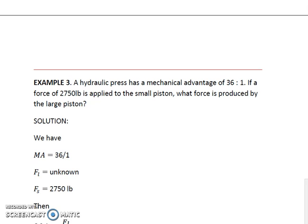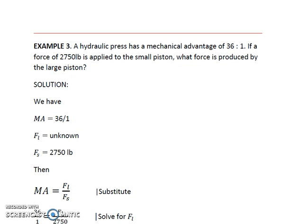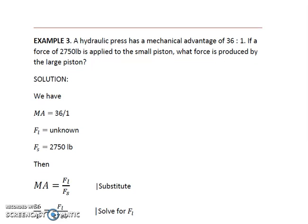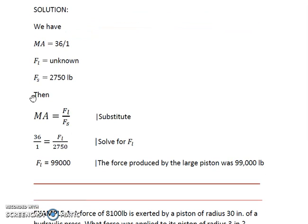Example 3. A hydraulic press has a mechanical advantage of 36 to 1. If a force of 2,750 pounds is applied to the small piston, what force is produced by the large piston? We use the formula relating the two forces. We have mechanical advantage of 36 over 1 and the small force of 2,750 pounds. Applying the proportion property and cross multiplying: 1 times the large force is just the large force, and 36 times 2,750 equals 99,000. So the force produced by the large piston is 99,000 pounds.